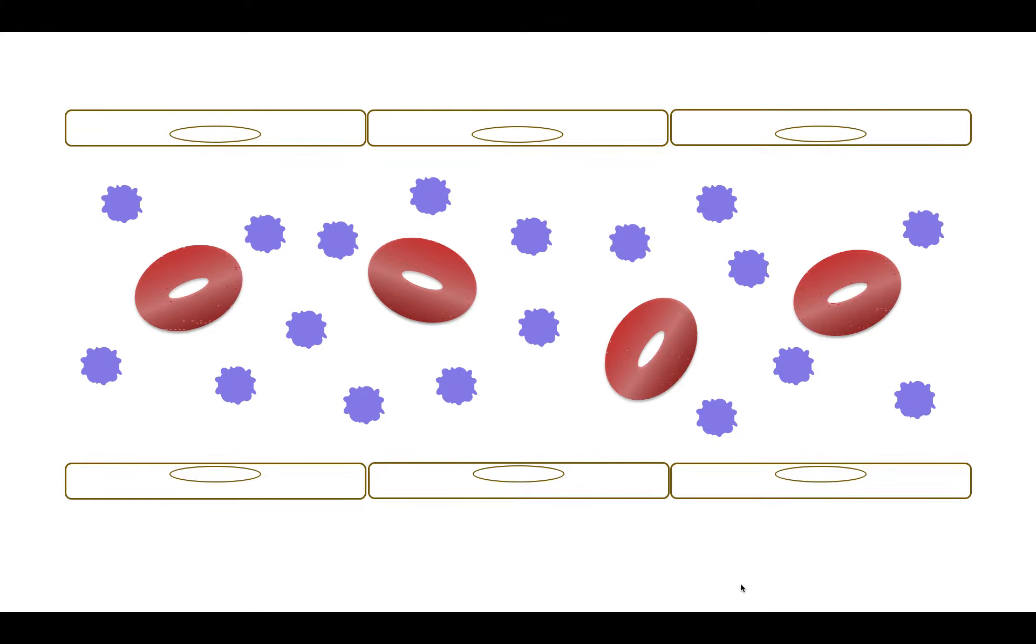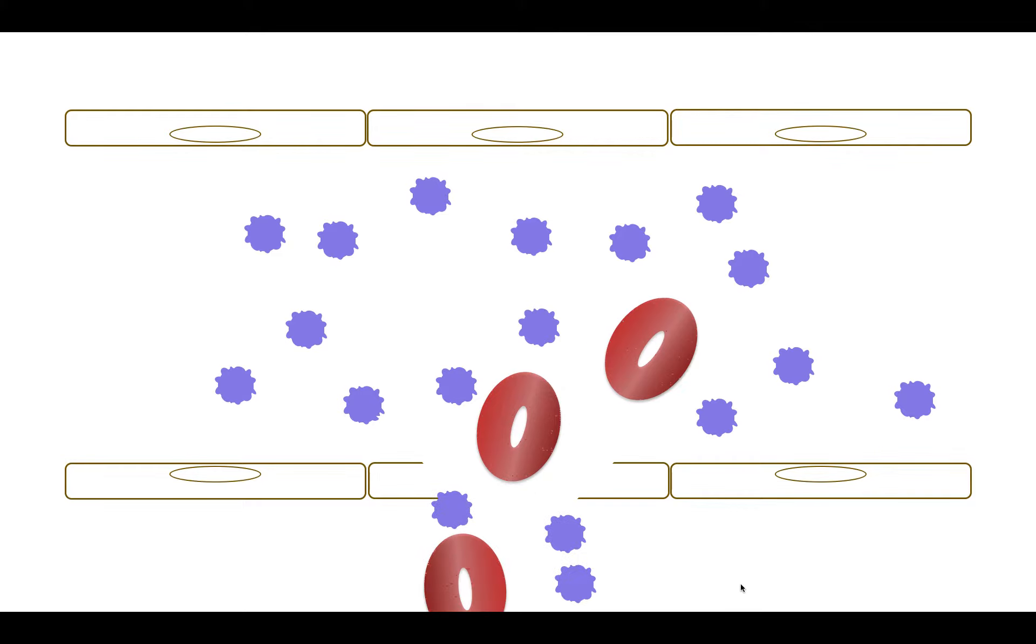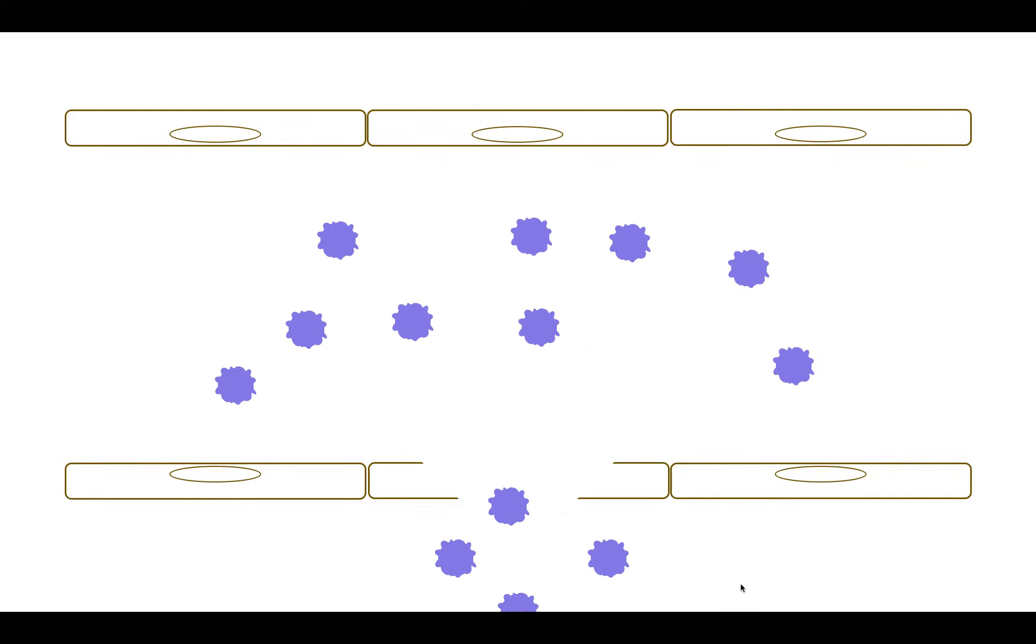Now, let's introduce a break in the endothelium to simulate endothelial injury. Once the endothelium is injured, you create an opening that allows blood elements, such as red blood cells and platelets, to start to flow out of the injury site.